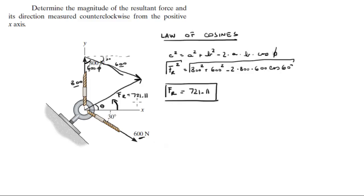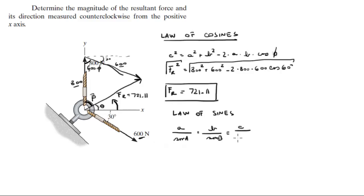Now let's find this angle — we need to find theta. Let's call this intermediate angle beta. You can use the law of sines, which says side A over sine of its opposite angle equals side B over sine of its opposite angle, equals side C over sine of its opposite angle. Plugging in: FR over sine of 60 degrees equals 600 over sine of beta.